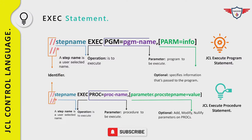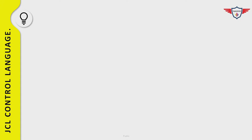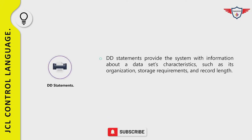DD statements are used to define datasets used in your programs. The Data Definition statement defines the characteristics of a dataset — including record length, storage requirements, and organization. The syntax of a DD statement is more complex because parameters can be coded in various combinations depending on whether the dataset is new or old, temporary or permanent, or cataloged or uncataloged.